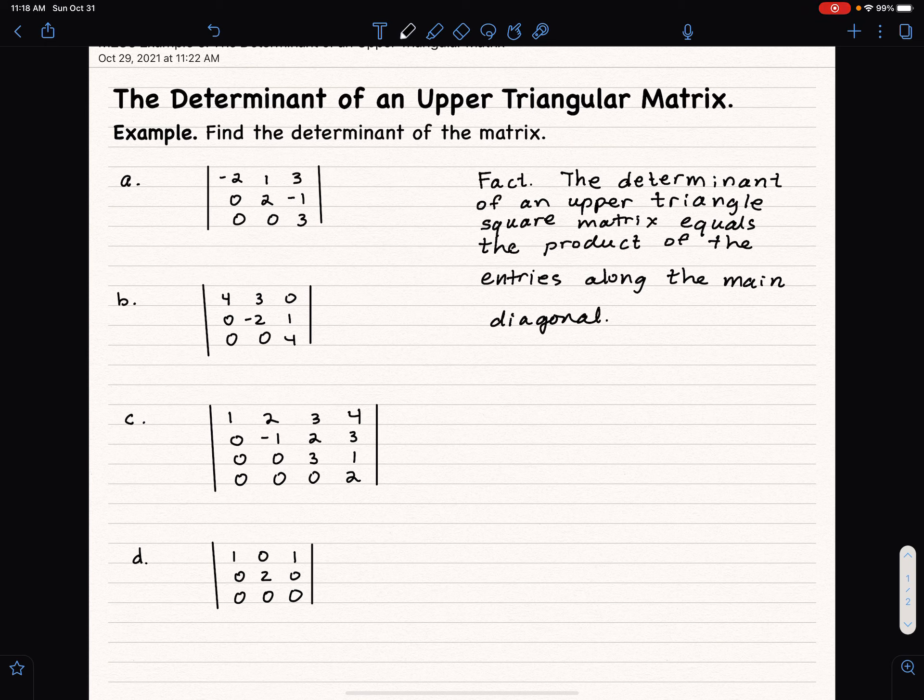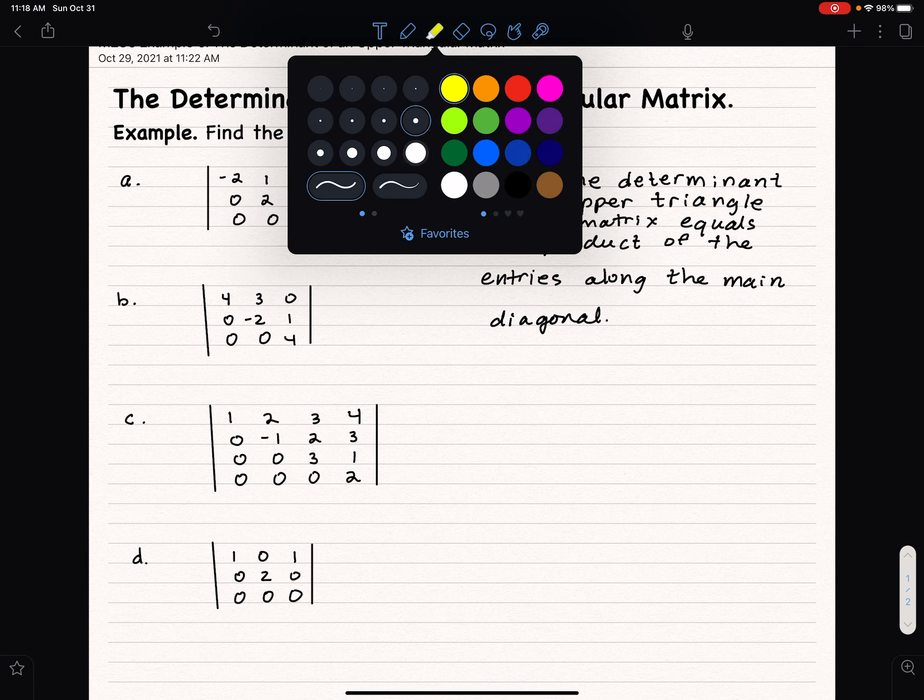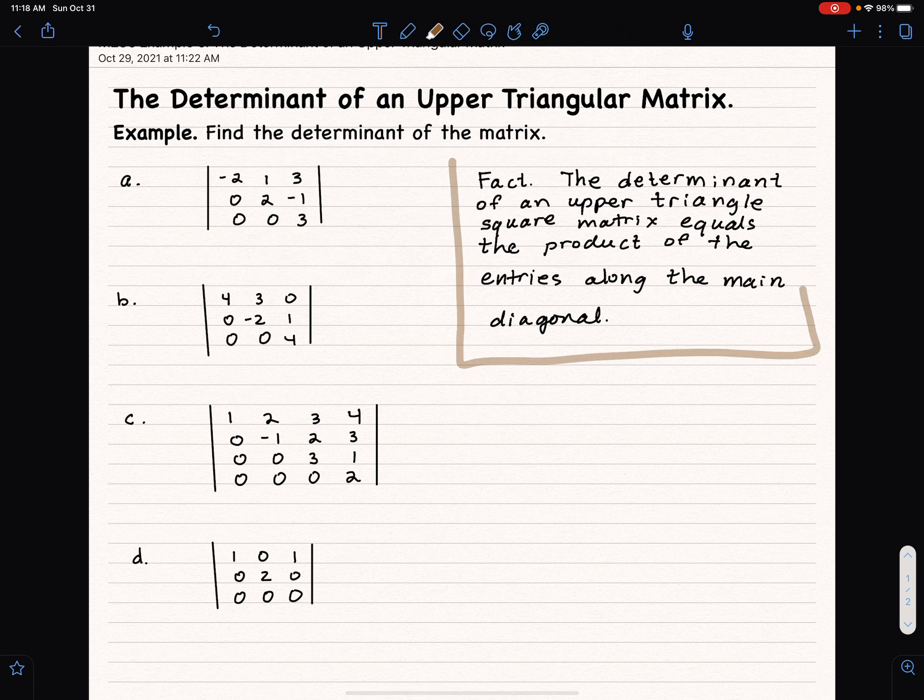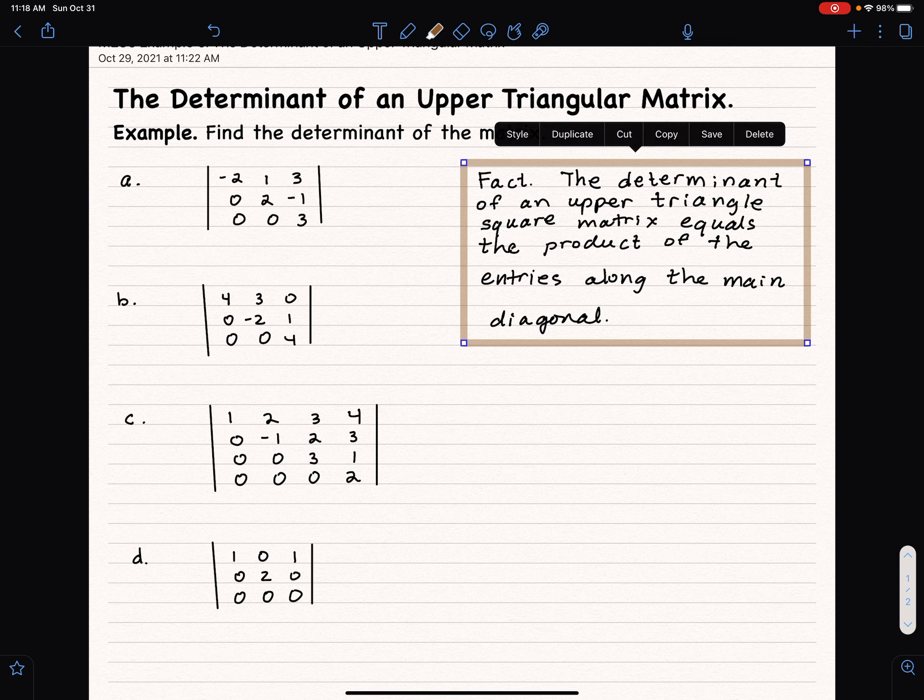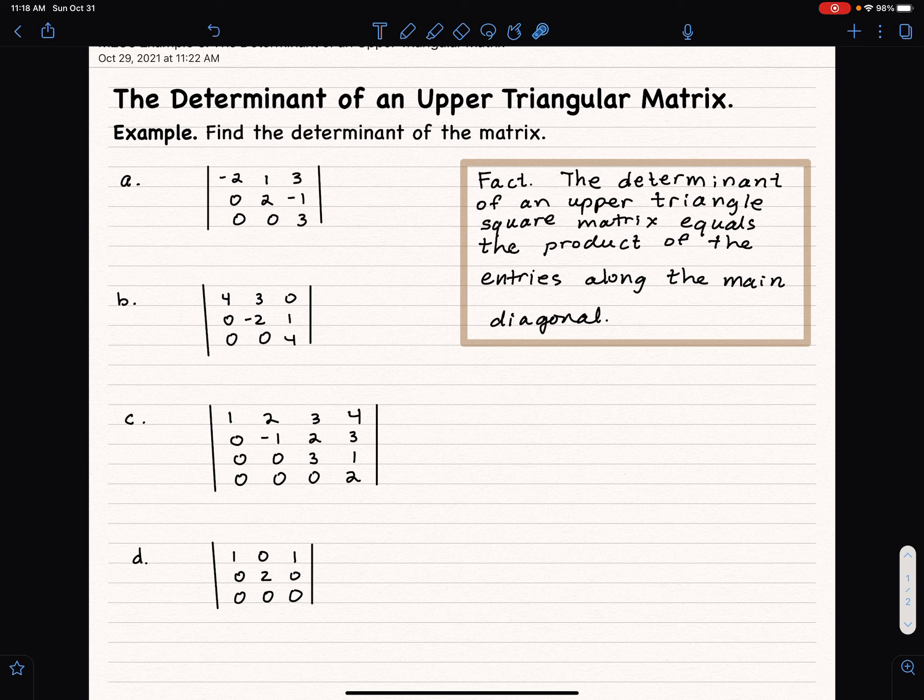In order to understand this, what we need to do is stop and think, what does it mean for a matrix to be upper triangular? And also what's the main diagonal? Let's start with the idea of a main diagonal.